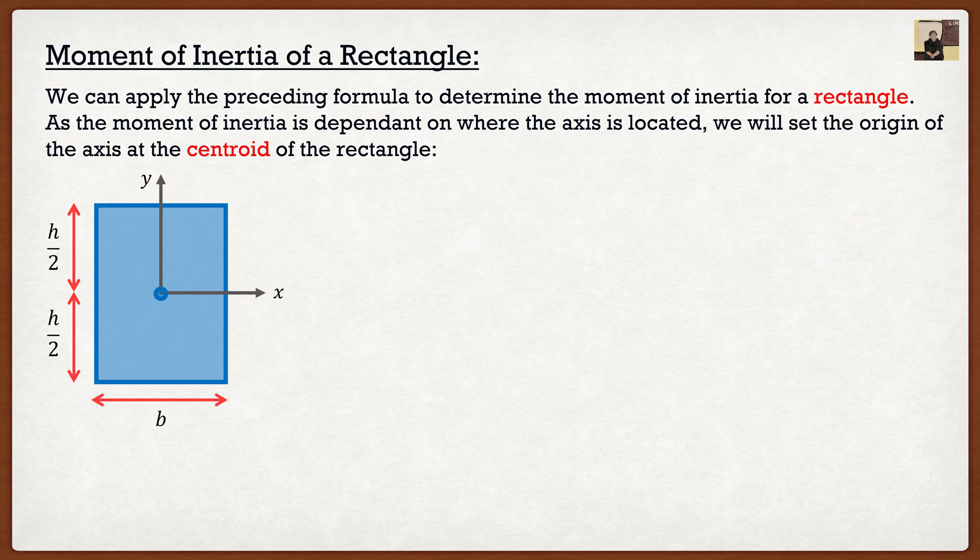So if we were to take our shape and we wanted to find the moment of inertia about this x-axis, well we know that our formula is simply going to be the integral of y squiggle squared dA. So again the whole process here is going to be the same for centroids, where in order to solve this integral we want to basically take a slice.